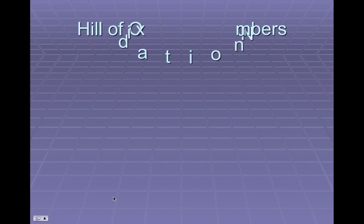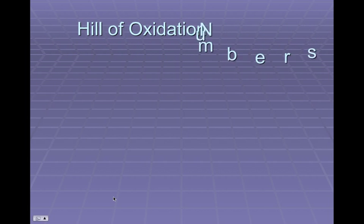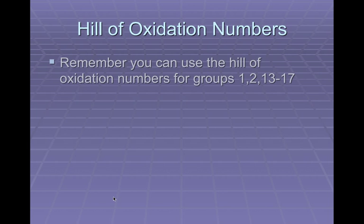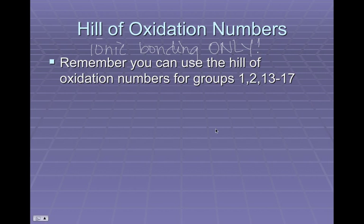First of all, we have this thing called the hill of oxidation numbers — something I made up that you can use whenever you're dealing with ionic bonding only. Do not try to use this with covalent bonding, but the hill of oxidation numbers looks like this.